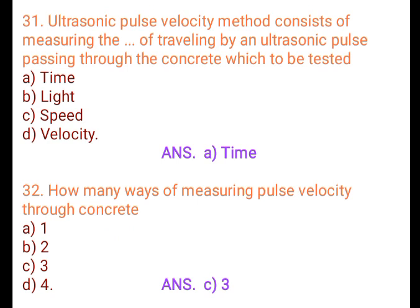Question 32: How many ways of measuring pulse velocity through concrete? A. 1, B. 2, C. 3, D. 4. Answer: C. 3.